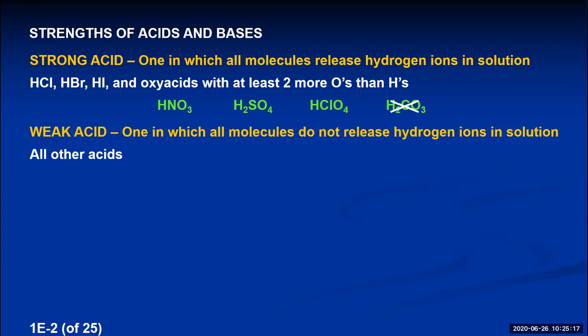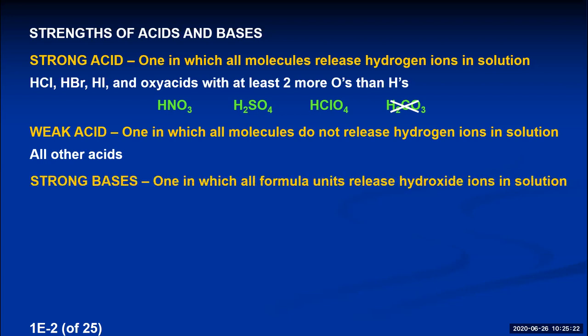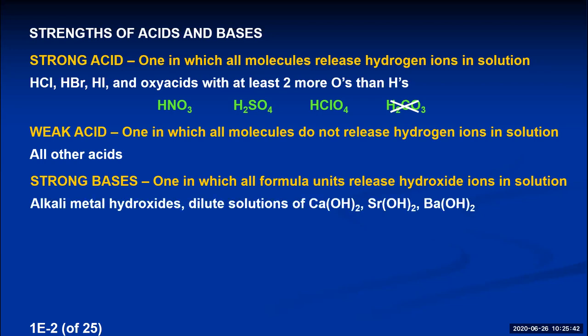For bases, a strong base is one in which every single formula unit releases a hydroxide ion into solution. The strong bases are ionic compounds that contain hydroxides in their formula and are soluble in water — specifically the alkali metal hydroxides like lithium hydroxide, sodium hydroxide, and potassium hydroxide. When you dissolve these in water, they completely dissociate, producing a lot of hydroxide ions and making strong bases.